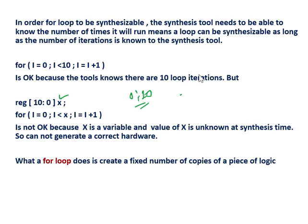Since x is a variable, x can be 0, 1, 2, 3 — it can be anything. So it is unknown at synthesis time. During compile time, the synthesis tool cannot generate correct hardware for this, where x is a variable and can be 0, 1, 100, 1000, or 2000. So this piece of code is not synthesizable, but the previous one with i less than 10 is synthesizable — the synthesis tool will be able to generate hardware for that one.